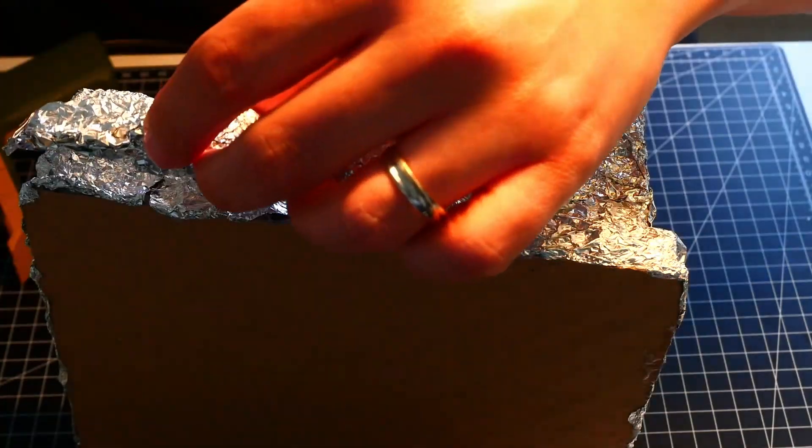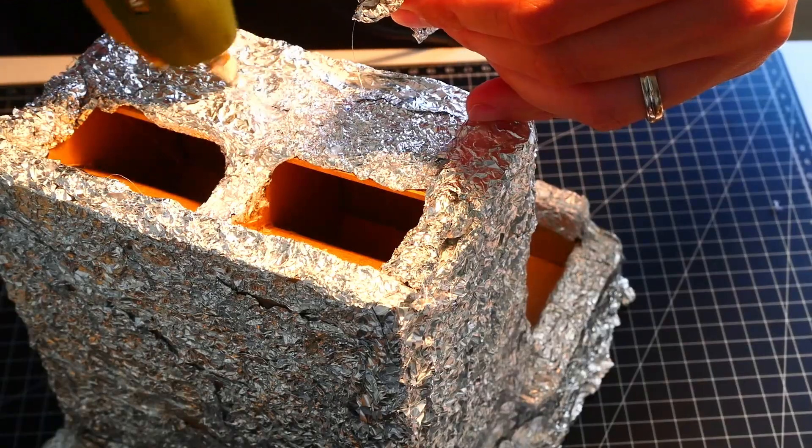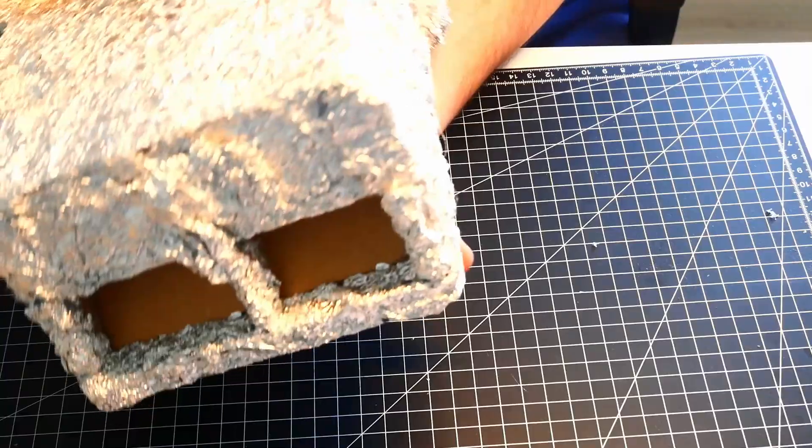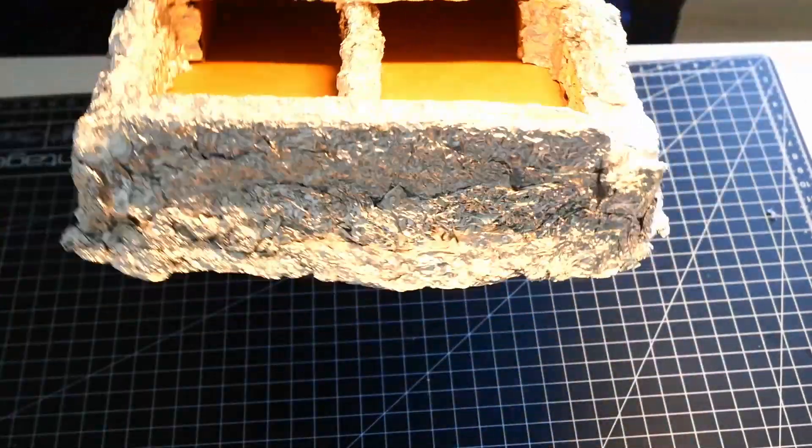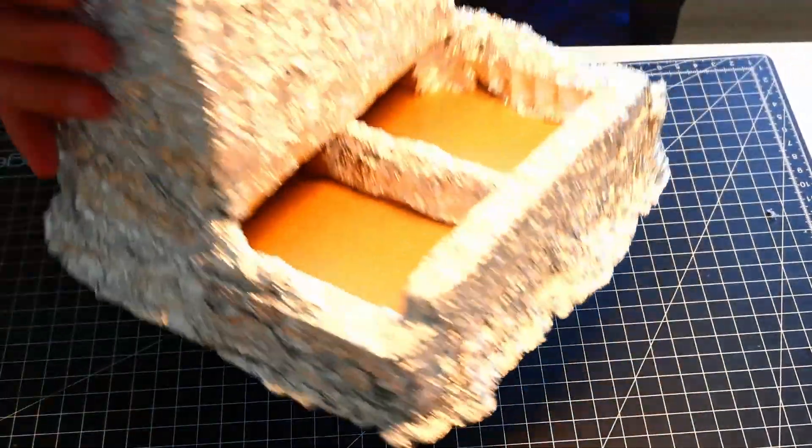Now we glue some further extensions to the side. To make it all a little bit less boxy and a little bit more organic. There is no real perfect way of doing this. Just do what feels right to you.